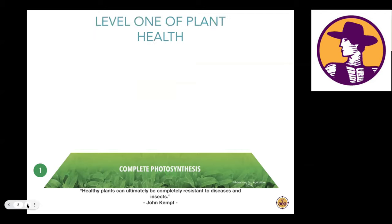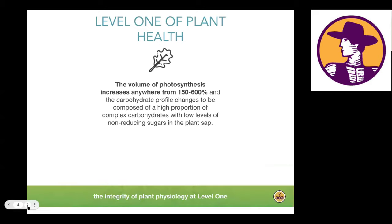At level one — complete photosynthesis — we are getting both a larger quantity of photosynthesis in each 24-hour photo period and more complete photosynthesis. One of my recent blog posts is titled 'Photosynthesis Is Not a Constant,' which addresses a foundational flaw in much of the agroecology research on carbon sequestration — the assumption that photosynthesis happens at a constant rate of speed. It doesn't.